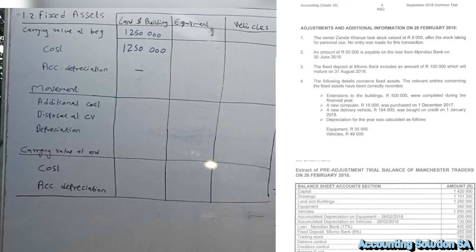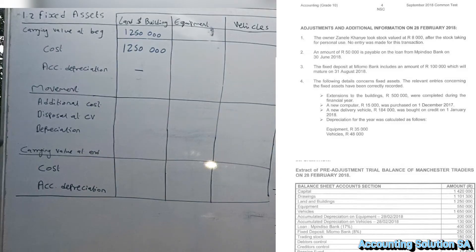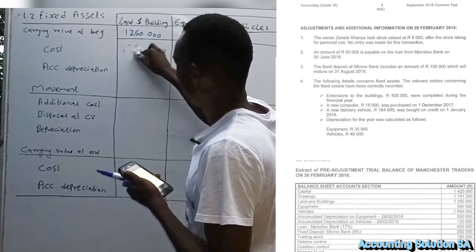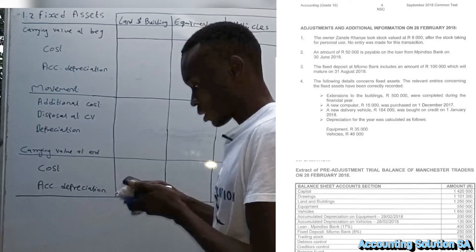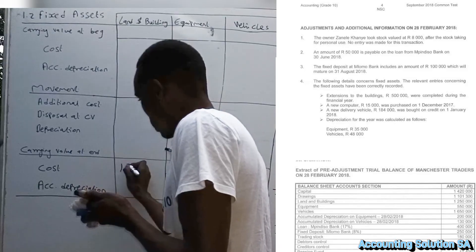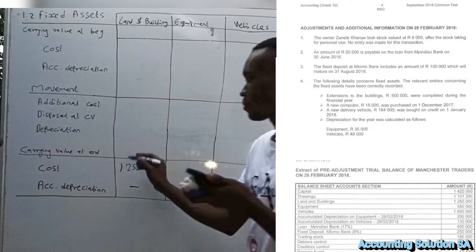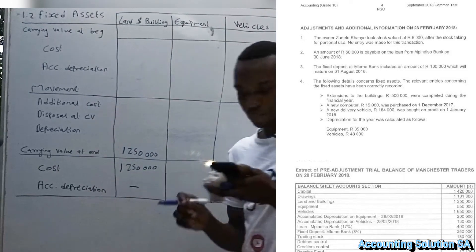For accumulated depreciation, they specify that it is for 28 February 2018, but if they didn't specify, we assume it is for the year end. Now let's start with the cost price of land and building. The balance given is 1 million 250 000. We don't have accumulated depreciation for land and building, which means we subtract zero and are left with the same carrying value of 1 250 000.